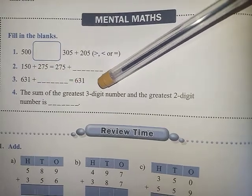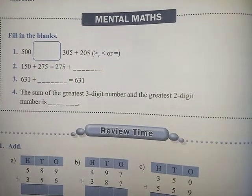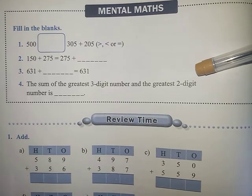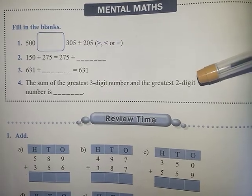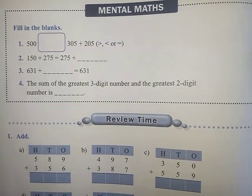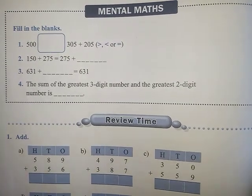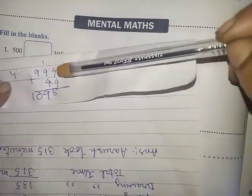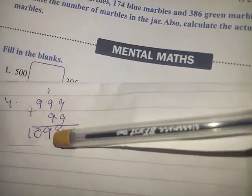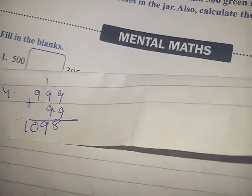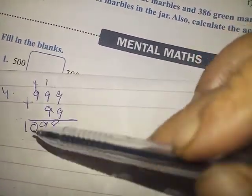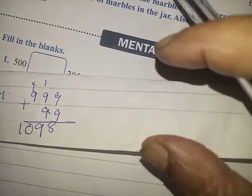Now the sum of the greatest three digit number, which is 999, and the greatest two digit number, which is 99. 999 plus 99. See: 9 plus 9 is 18, carry 1. 18 plus 1 is 19. Then carry 1, 9 plus 1 is 10. That will be the answer.